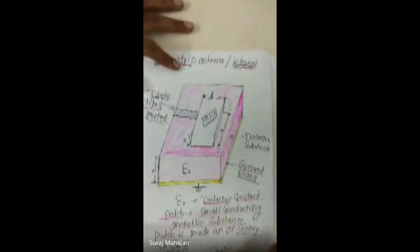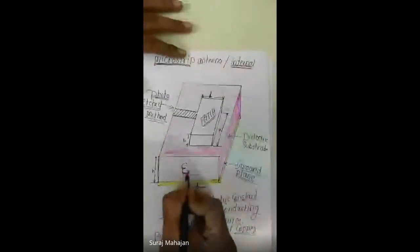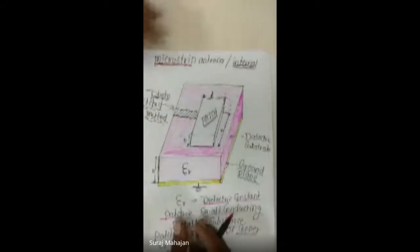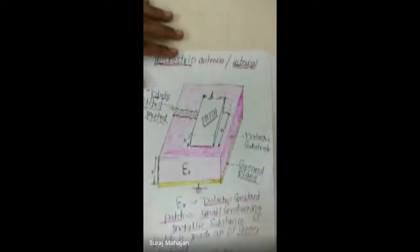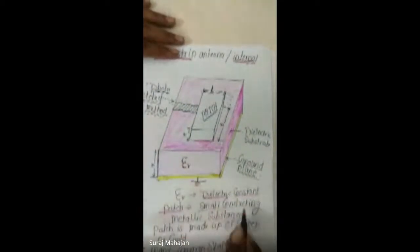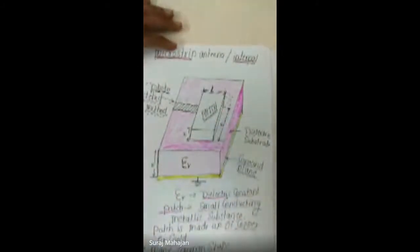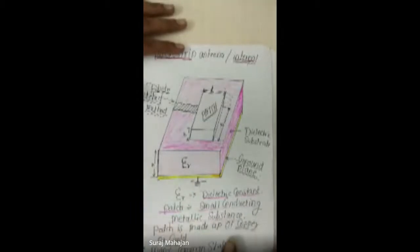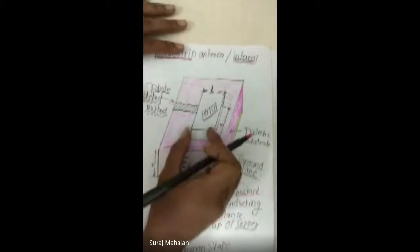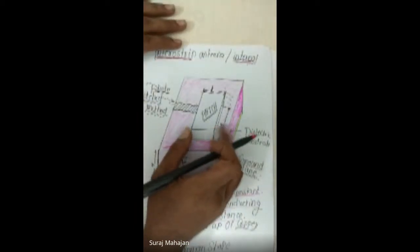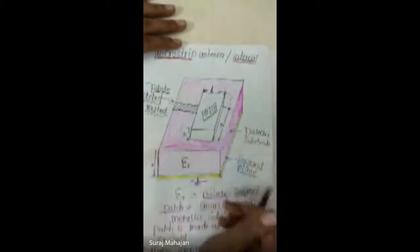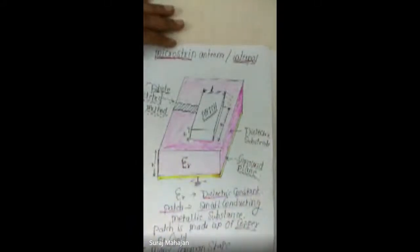Epsilon r is the dielectric constant of this substrate. The patch is a small conducting metallic substance — it is conducting and radiating. This patch is made up of copper and gold. However, if we use gold the system will become costlier, so mostly in microstrip antenna we use copper patch — copper is mostly used.